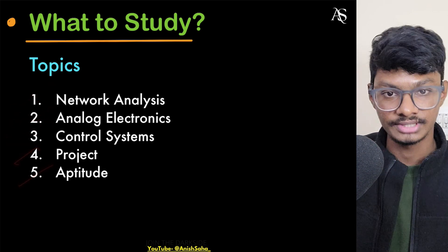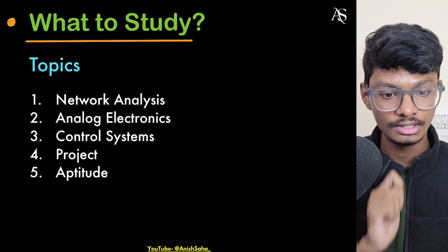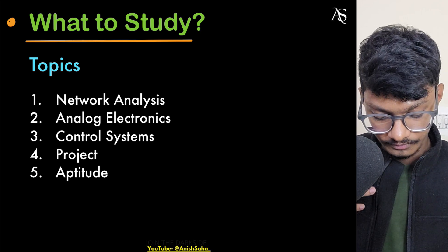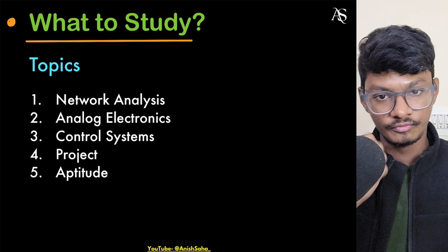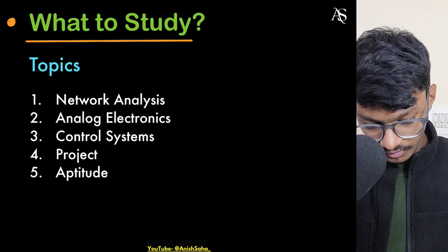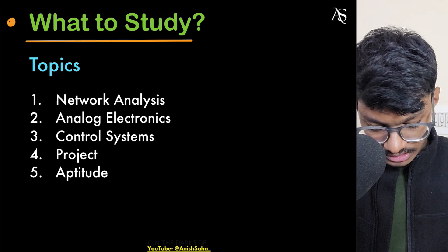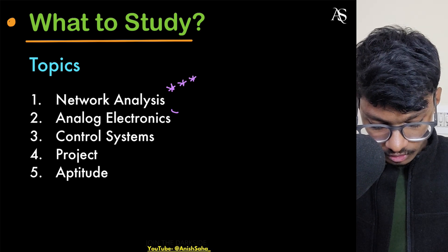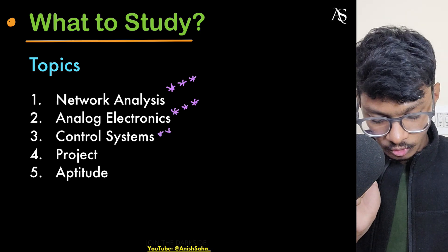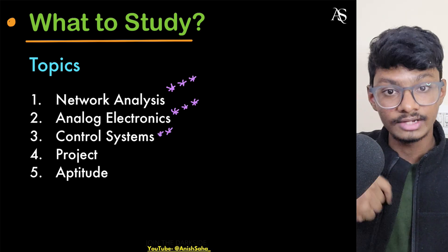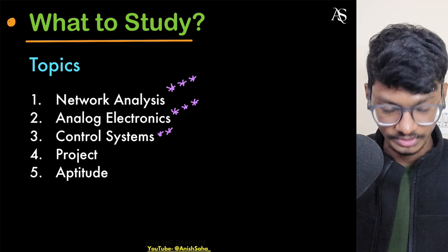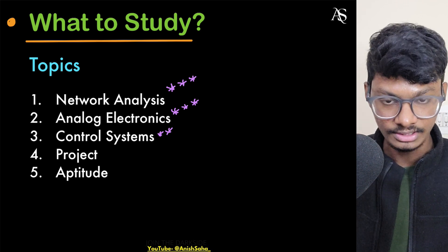You also have to study a bit of aptitude for clearing the written test. The high-priority topics are network analysis and analog electronics. Control systems is lower priority — you'll do that after finishing these two. I'll tell you exactly what to study in each of these topics.